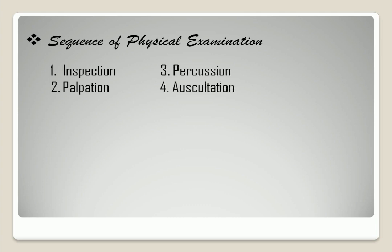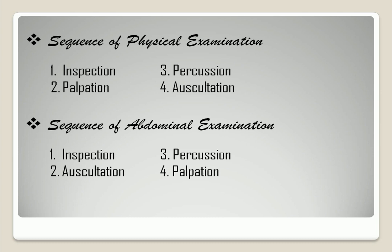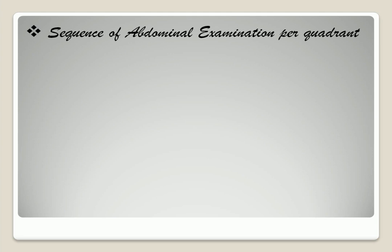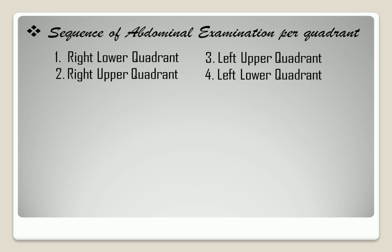and auscultation. While the correct sequence for performing an examination of the abdomen is inspection, auscultation, percussion, and palpation. This is what they call IAPEPA or IMPEPA as their keyword. If per quadrant, the correct sequence should be right lower quadrant, right upper quadrant, left upper quadrant, and left lower quadrant.